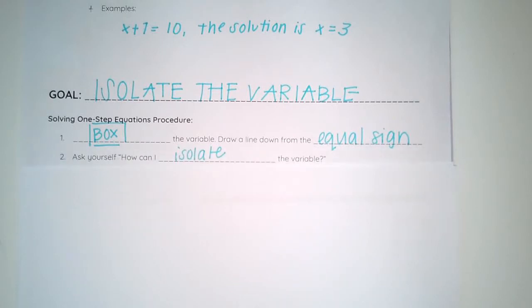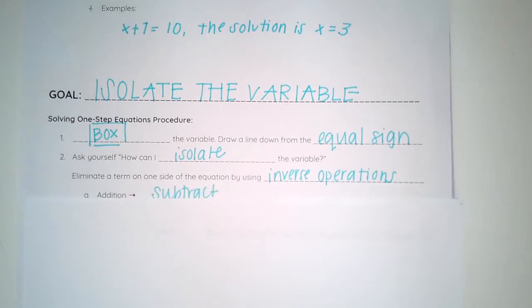We then ask ourselves, how can I isolate the variable? How can I get that variable by itself? We use inverse operations to isolate our variable and get rid of one of the terms on one side. To inverse an operation, if we have addition, we would subtract to inverse that addition. And if we have subtraction to inverse it, to get rid of it, to equal it out, we would add.